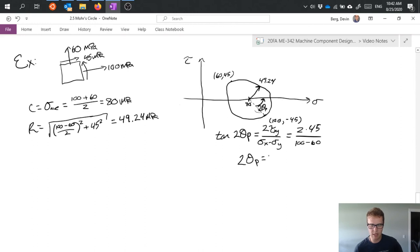But I get 2 theta p equals 66.04 degrees which therefore gives theta p equal to 33.02 or about basically 33 degrees.